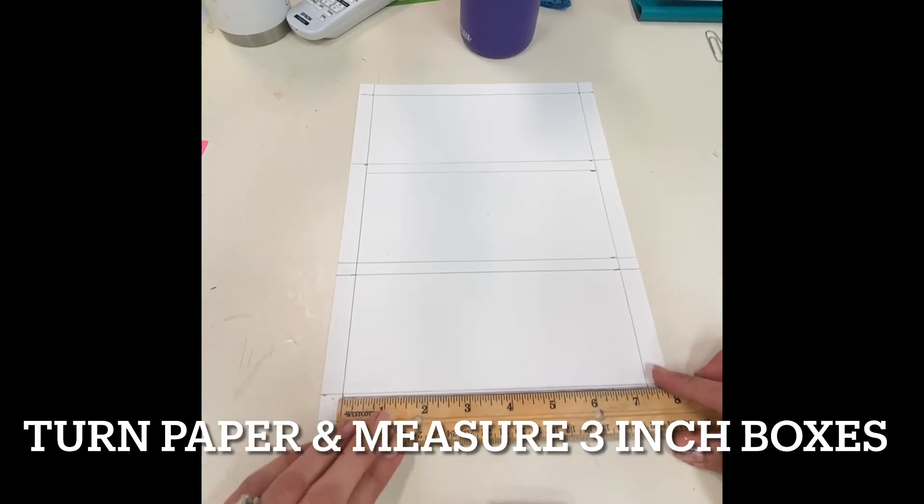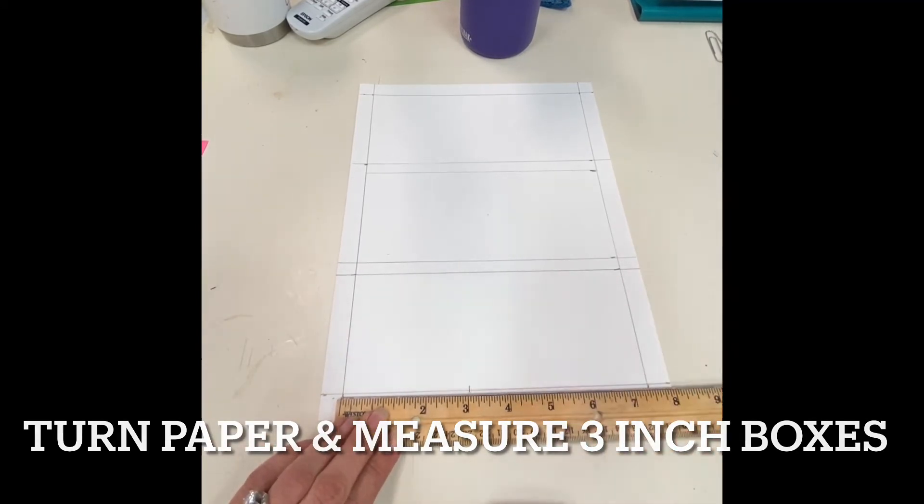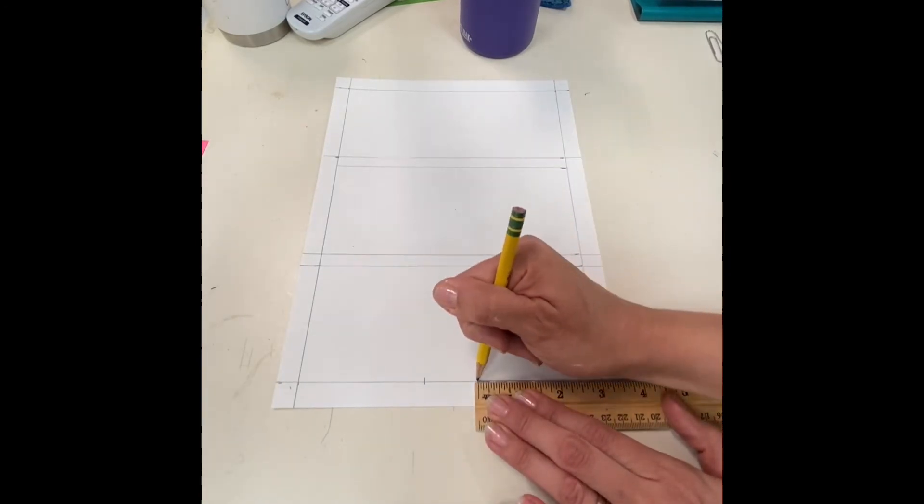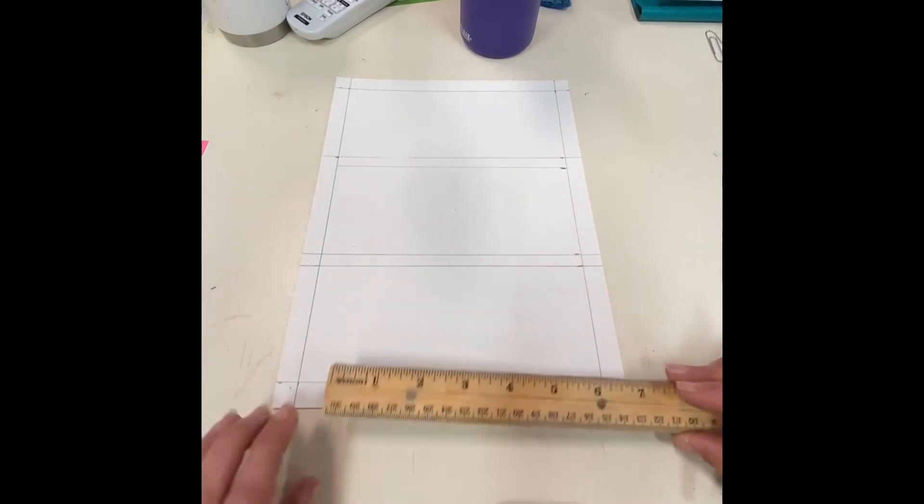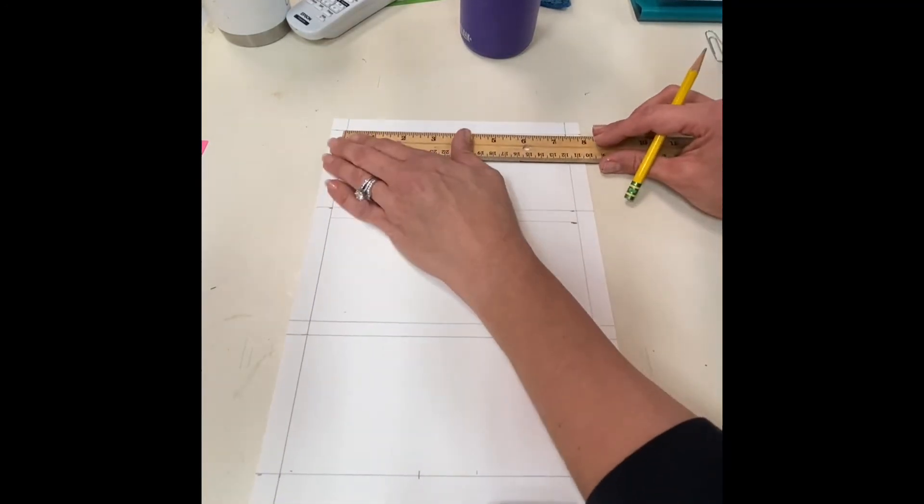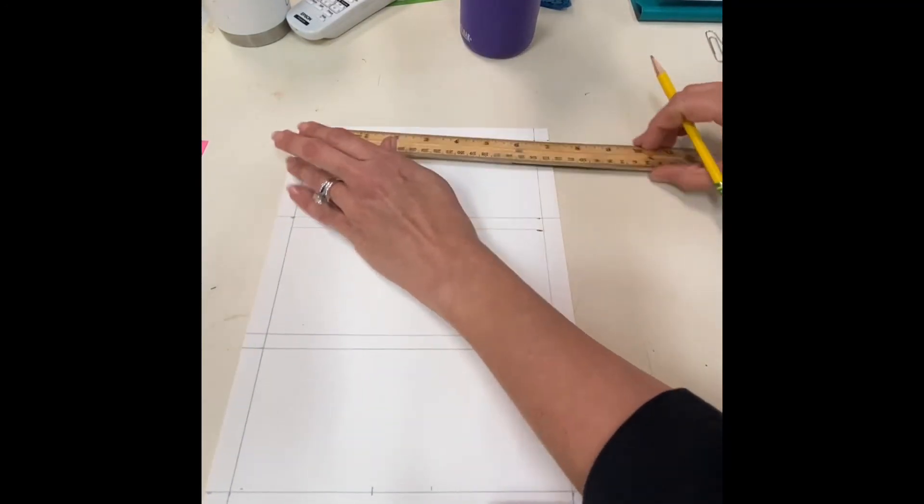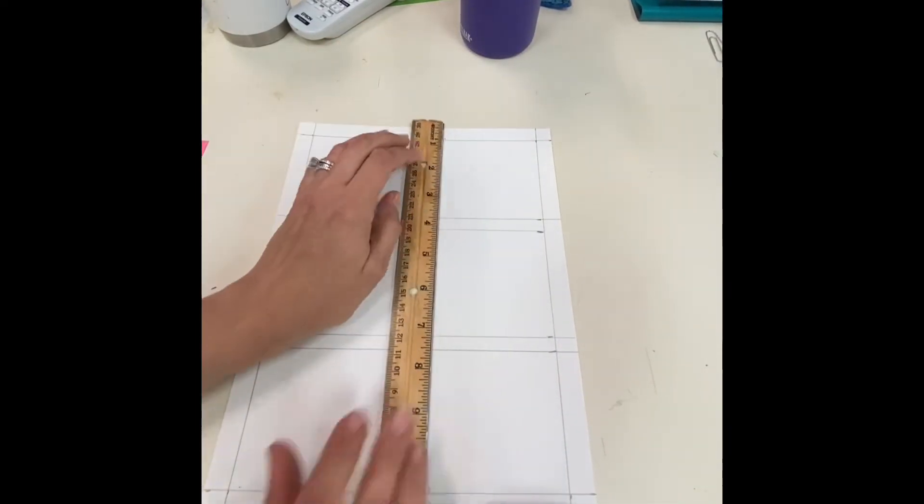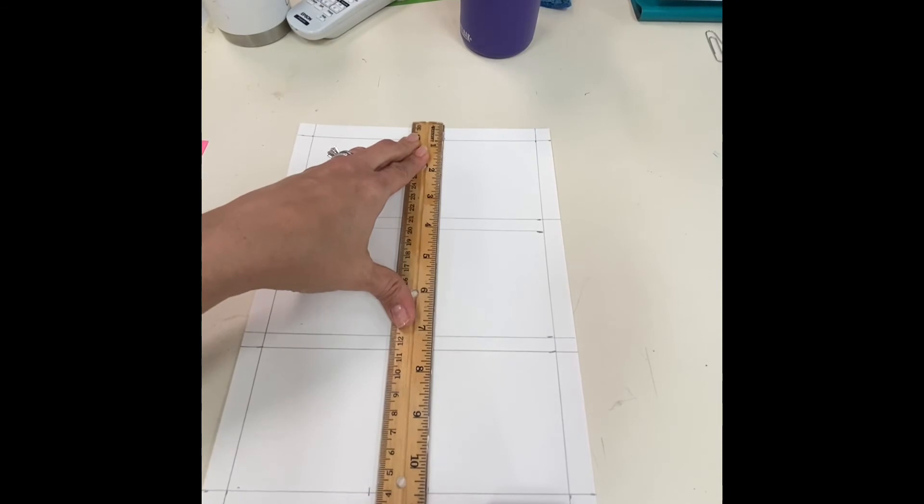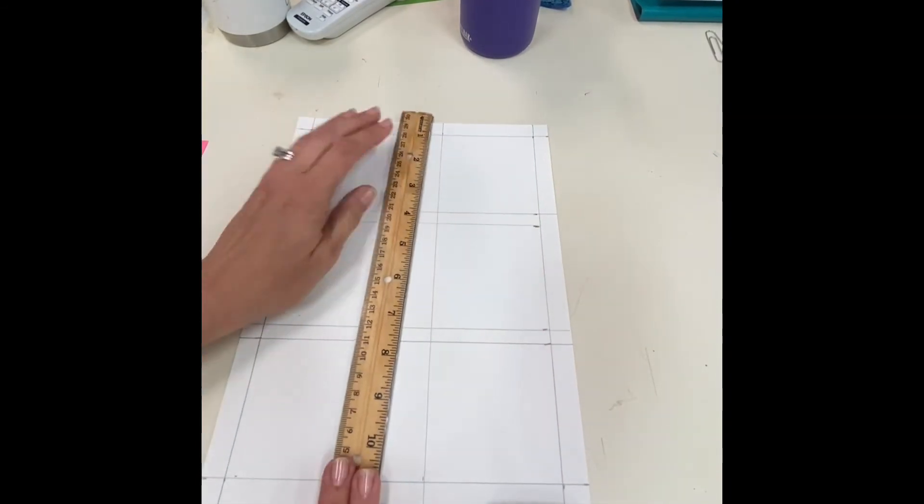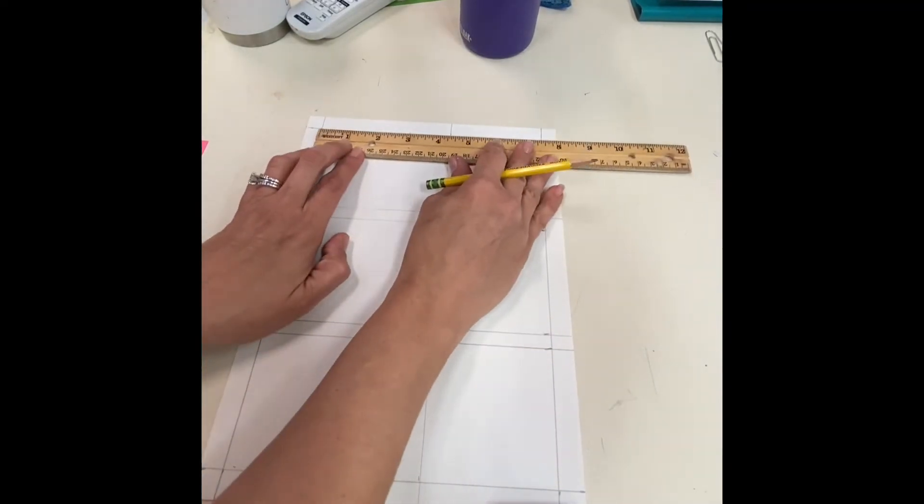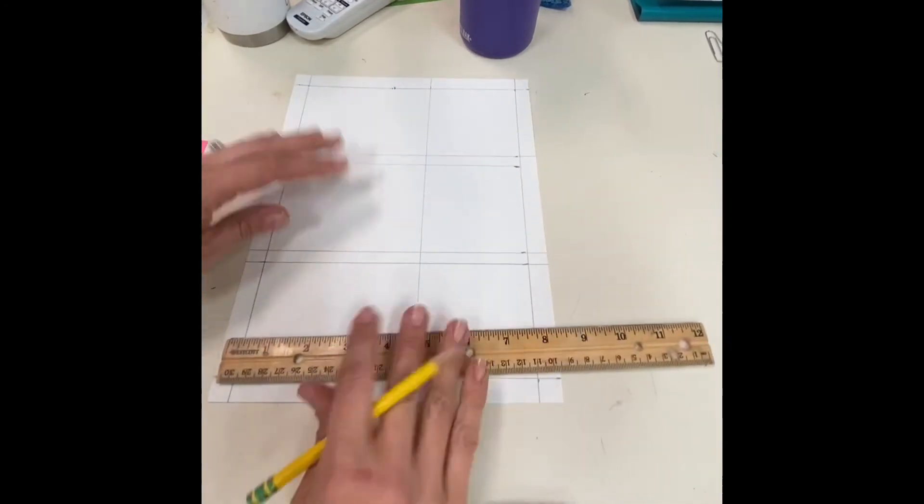Now you're going to turn your paper and repeat the process of measuring three inch boxes. You will again have a three inch box measured from the left side towards the center and another three inch measured from the right side towards the center. Once you've made your three inch measurements, you can go ahead and connect your lines and you should see two three inch columns and then in the center you're going to have a strip of blank space.